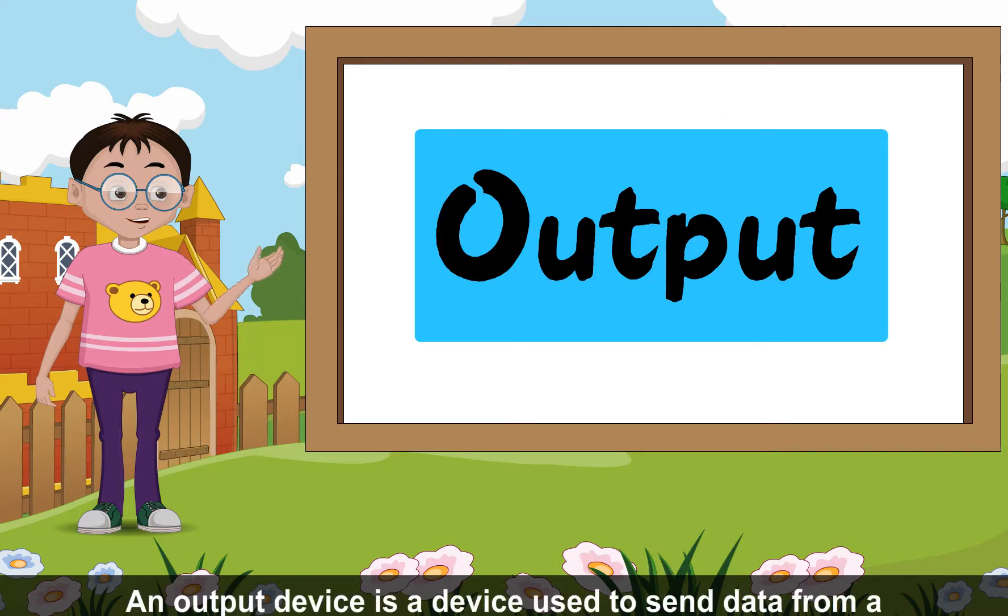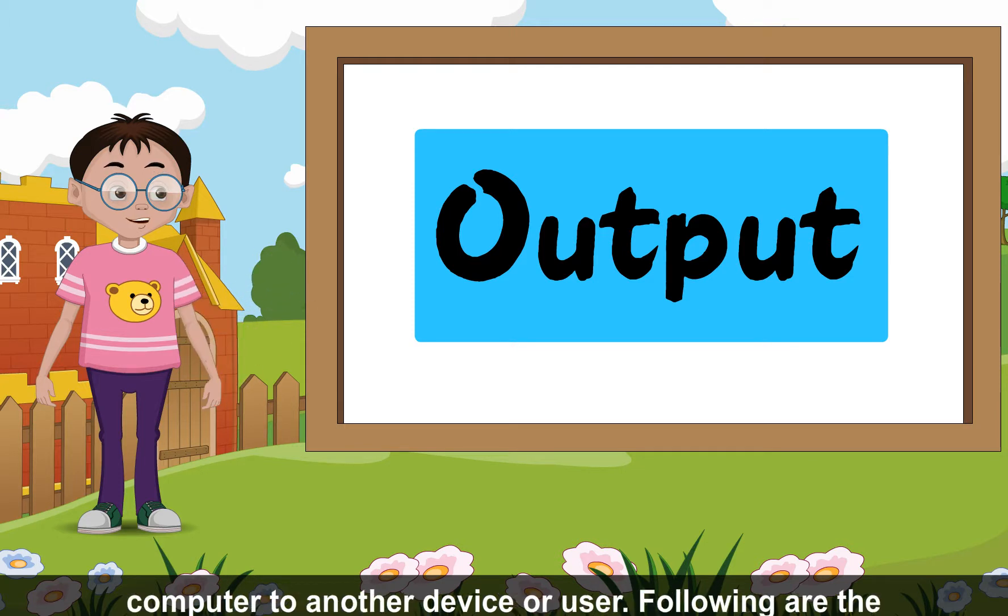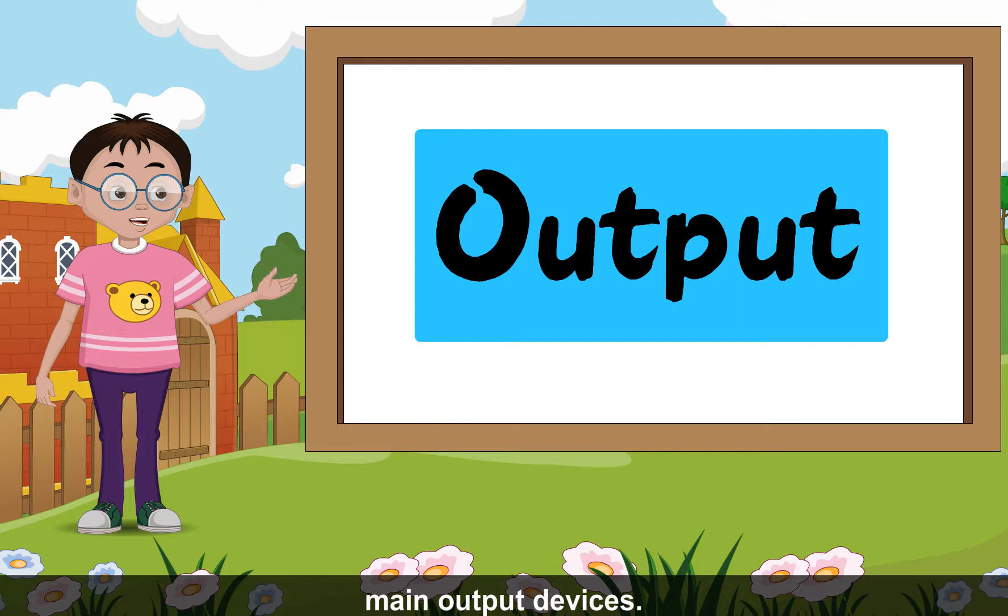Output: An output device is a device used to send data from a computer to another device or user. Following are the main output devices.